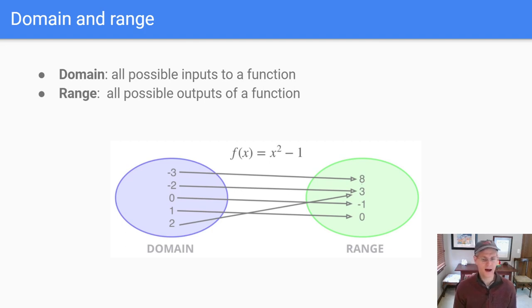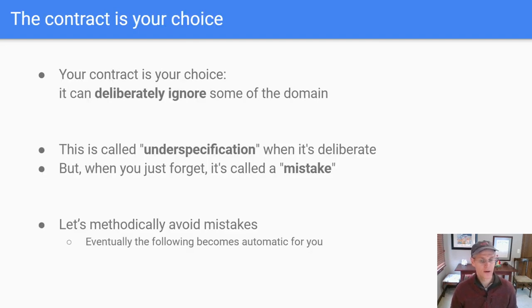Just one quick caveat. I know we a lot of times use the shorthand domain to mean problem domain, so like the domain and the solution. But in our particular case, right now we're talking about mathematical domains or domains and ranges of functions. So just a quick reminder here, remember the contract is your choice. That means you can, at your discretion, deliberately ignore some of the domain.